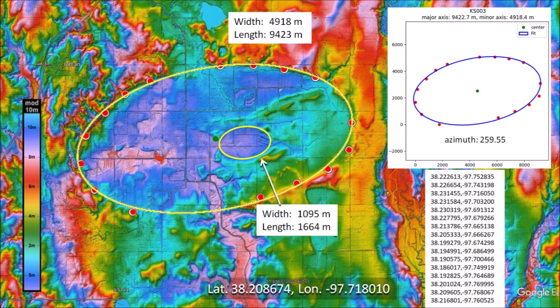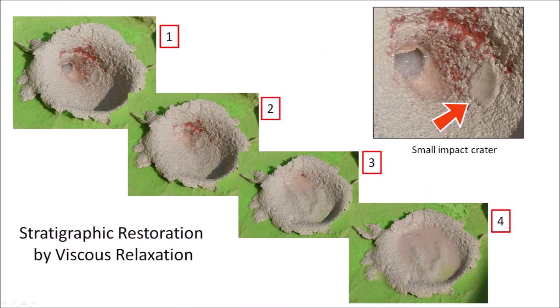This large basin has another basin within it. There are many examples of basins within basins on the East Coast, which is an indication of multiple impacts at the same location with different ballistic trajectories. Impacts within previous impact cavities are also seen in experiments. The small impact crater on the side of the large impact crater in this example was buried during viscous relaxation.